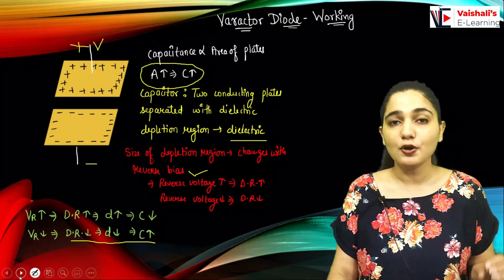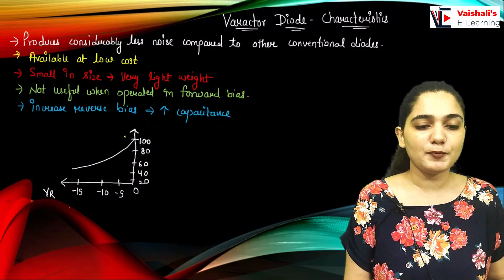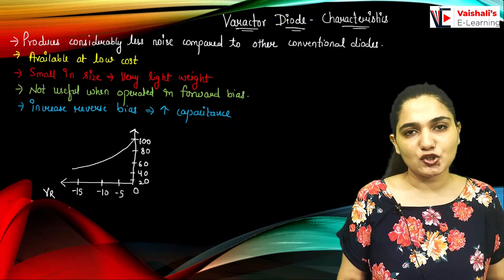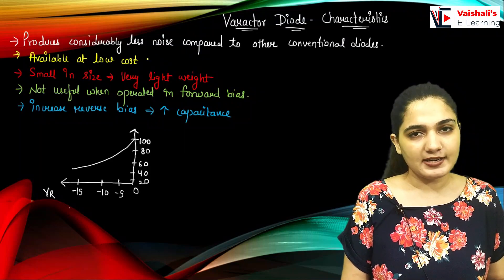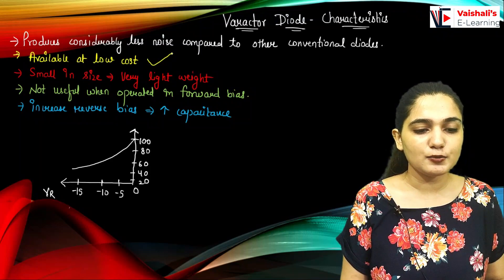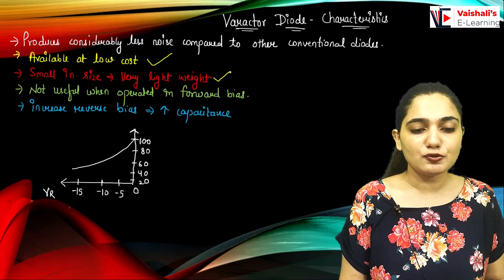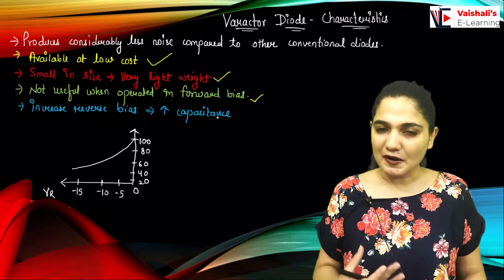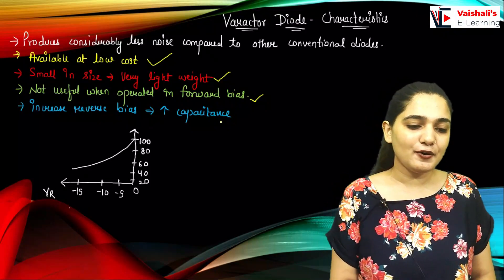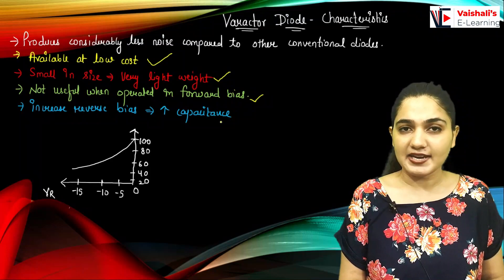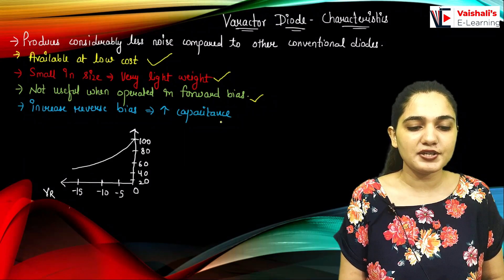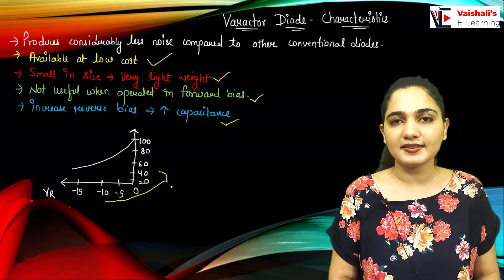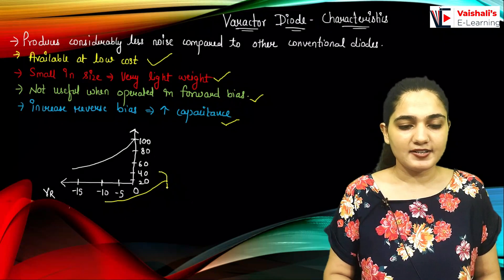Coming to the various characteristics: the varactor diode produces very less noise compared to other conventional diodes, which is a very big advantage. It is available at low cost and is very small in size and light in weight. It is not useful when operated in forward bias because the depletion region is very small in forward bias and it will not behave like a capacitor. So it is used as a variable capacitor only when reverse biased. If you increase the reverse bias, capacitance decreases.